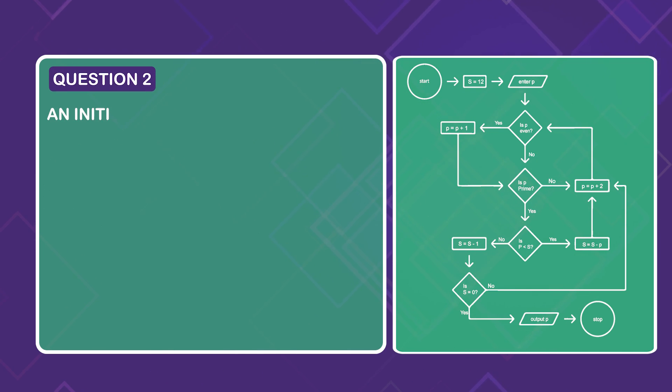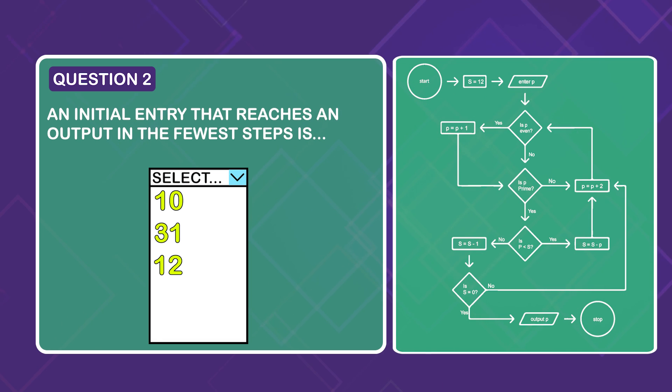Question 2. An initial entry that reaches an output in the fewest steps is 10, 31, 12, 1, or 3.